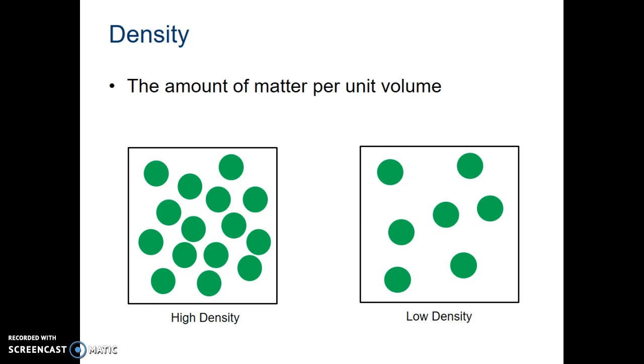Density is really just the amount of matter that's packed into a unit of volume. So you see here we have two boxes. Those squares are supposed to be the same size. You can see that there are quite obviously more things inside the left box, so we say that it is a higher density. The thing on the right has less material in it, so it's lower density. So notice it depends on how much matter you have and how much space you are taking up.